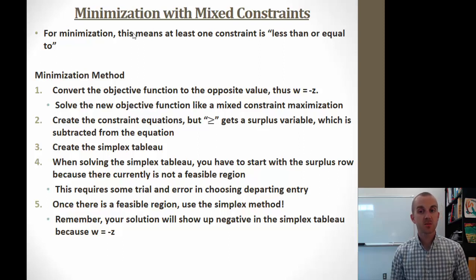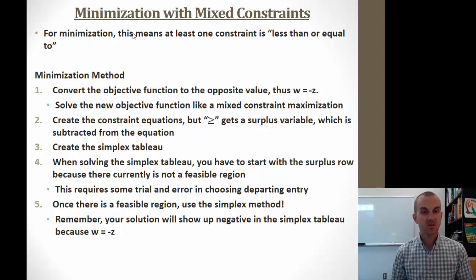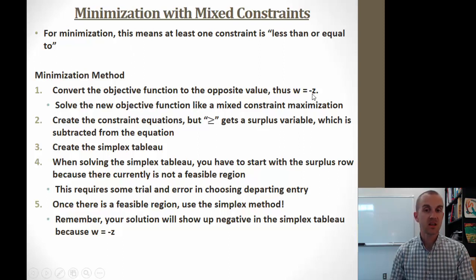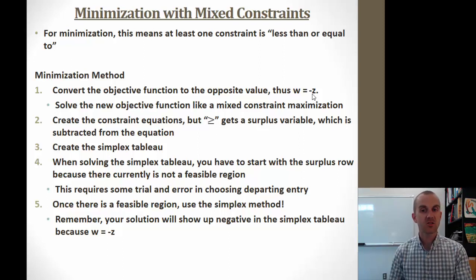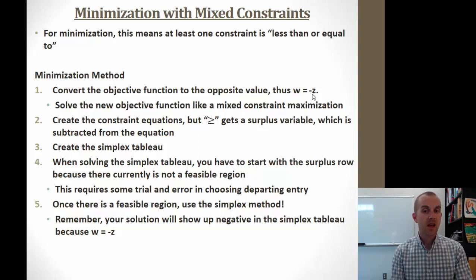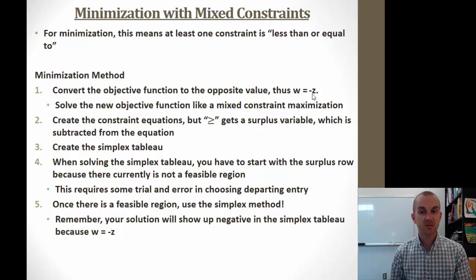For minimization problems, when one constraint is a less than or equal to, we handle it differently. We take the minimization equation and multiply the entire expression by negative 1, turning it into a maximization of negative z. We then treat it as a mixed-constraint maximization problem and follow the exact same steps to solve it.